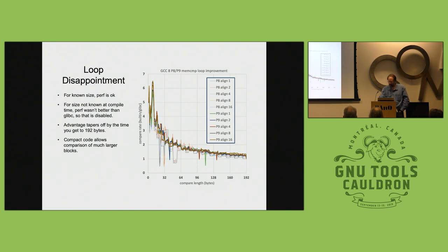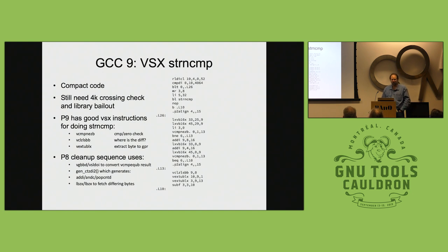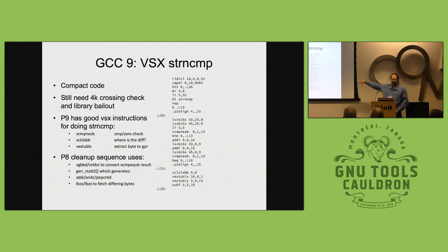The next thing was to start looking at vector instructions, because they're nifty and do twice as much work per instruction, which means we can compare twice as much string with the same number of added instructions. Plus P9 has this whole nifty set of instructions for doing string compare.